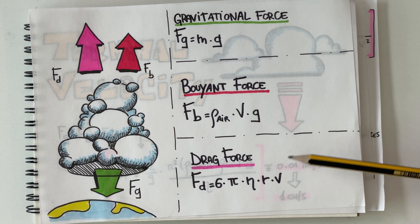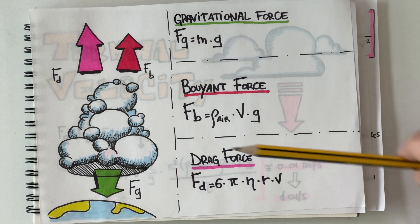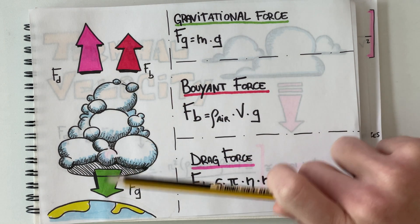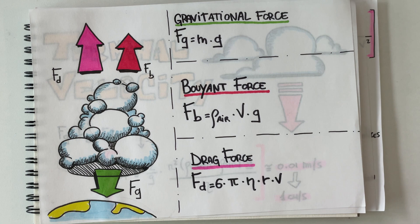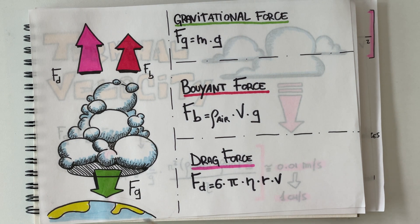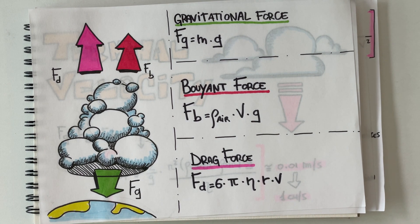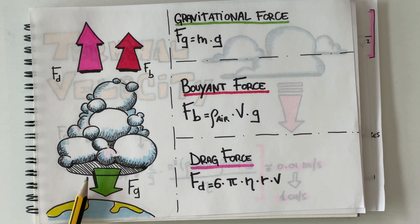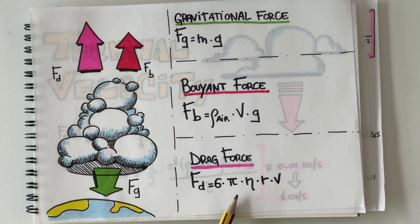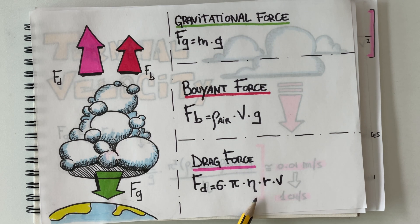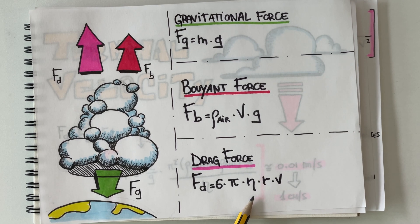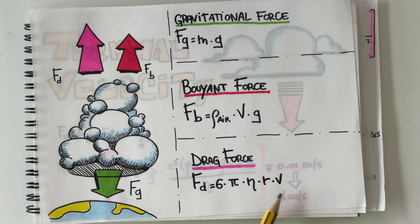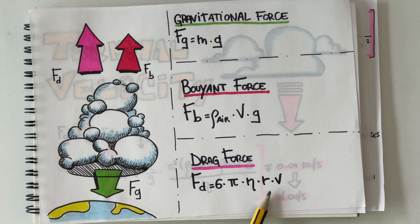Last but not least we're gonna have the drag force. In fact, when this giant is moving, of course it's gonna create some kind of drag. And the best equation I found to model this situation with the assumptions that we did is 6 times pi multiplied by the dynamic viscosity of the air times the radius of each tiny droplet multiplied by the velocity of the droplet itself.